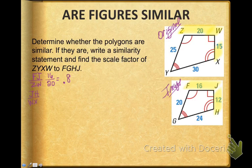Now let's look at side JH and WX. When I put those in a ratio and add numbers to them, 12 to 15, again I get 0.8.